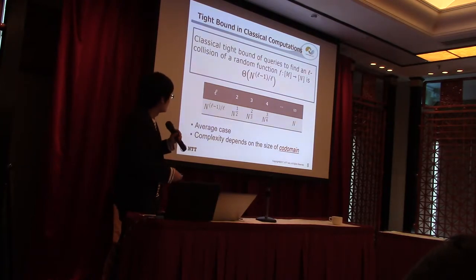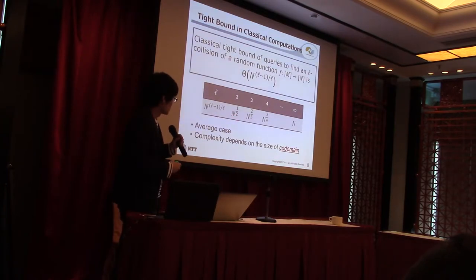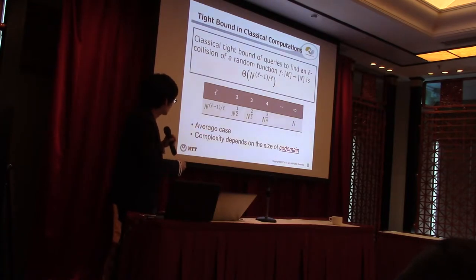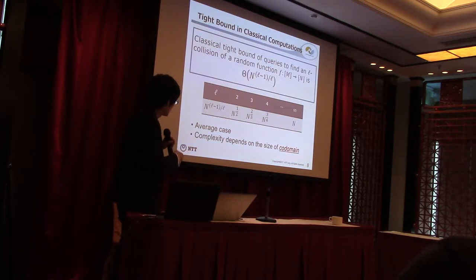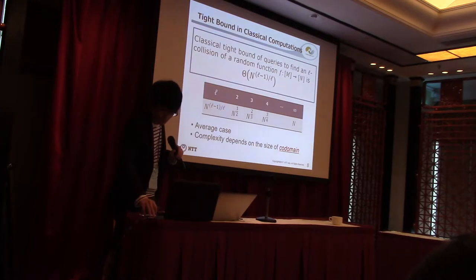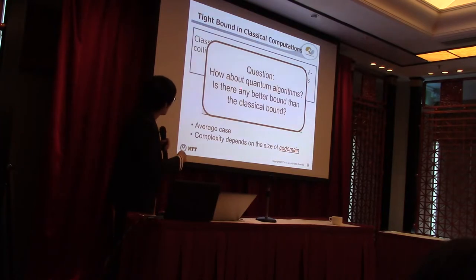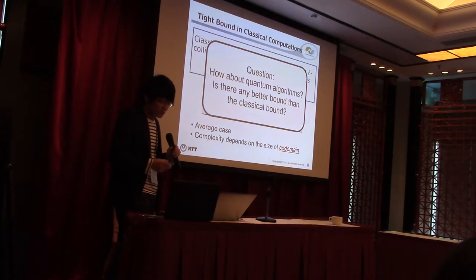If L is 2, then the bound becomes n to the power 1/2, which is known as the birthday bound. If L is 3, the bound becomes n to the power 2/3, and so on. I note that this bound is for a random function f, and the complexity is in terms of the domain size n. After seeing this result, my question is: how about quantum algorithms? Is there any better bound than the classical bound?